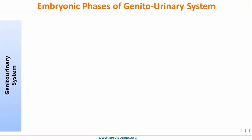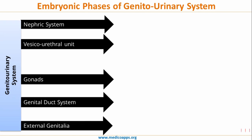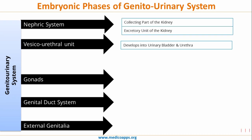As an overview of the genitourinary system: it consists of the urinary part, which further consists of the nephric system and the vesico-urethral unit, and the reproductive part, which consists of the gonads, the genital-ductal system, and the external genitalia. The nephric system consists of the collecting and excretory unit of the kidney, while the vesico-urethral unit consists of the urinary bladder and the urethra.